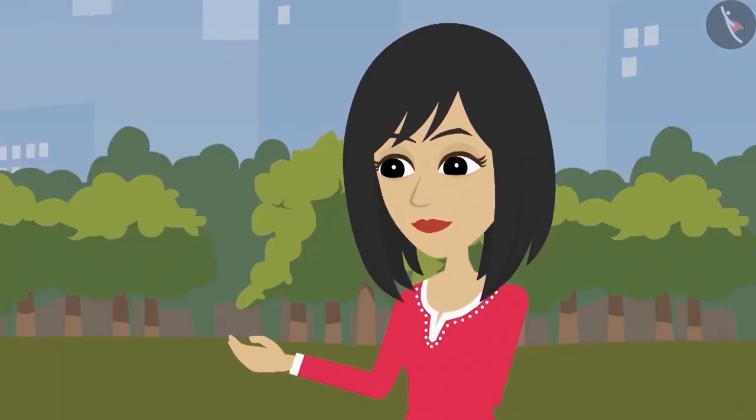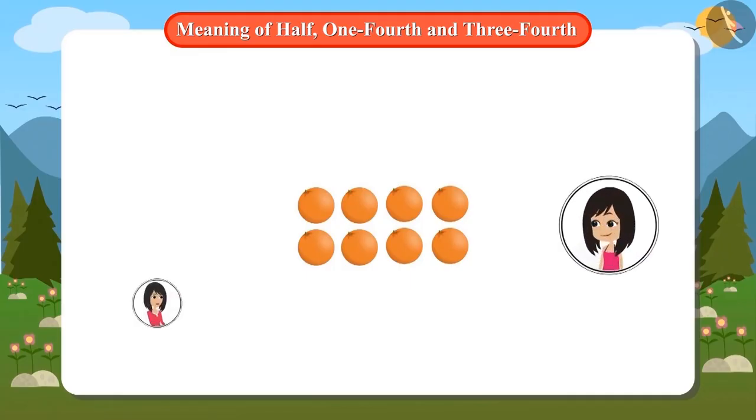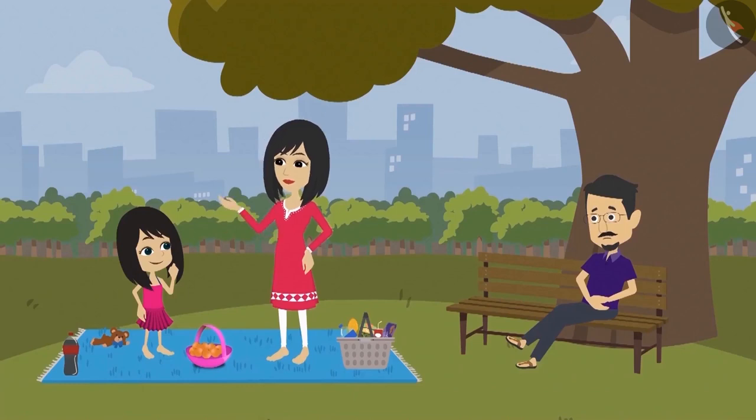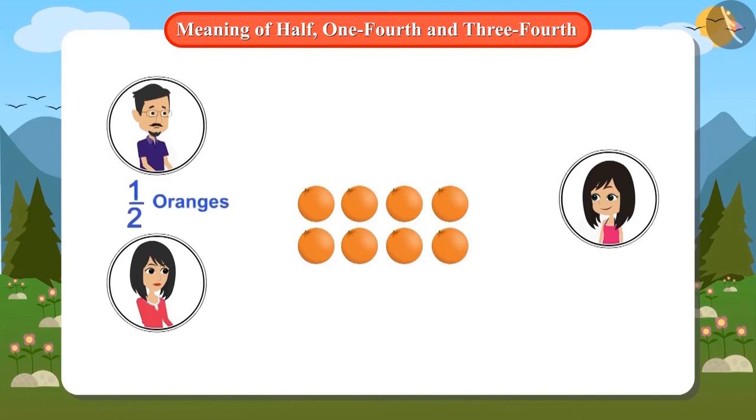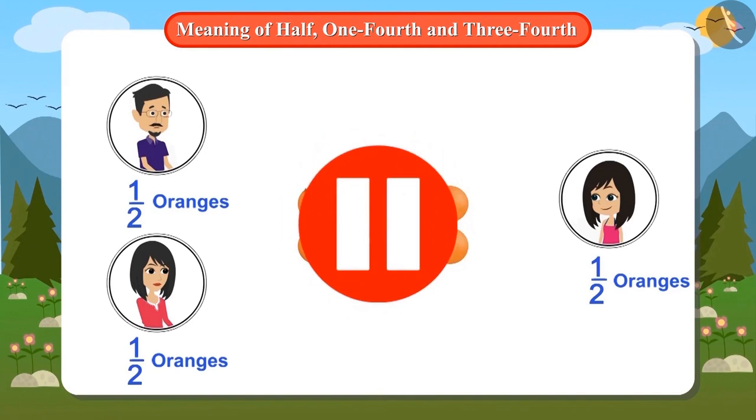Mummy tells her that all these oranges are for three people: for Neha, for Mummy and for Papa. Mummy asks Neha to divide the oranges among the three people by herself. She tells mother that she will give half of the oranges to father, keep half the oranges for herself and give half of the oranges for her mother. Stop this video and think if the oranges can be divided in half by three people.